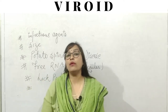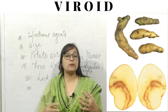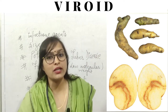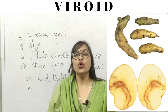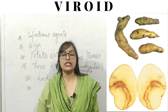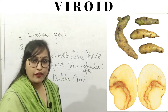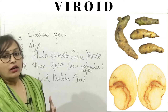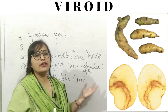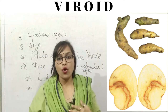The first viroid discovered was found to cause potato spindle tuber disease, which causes slower sprouting and various deformities in the potato plant. The potato plants do not look fresh, showing slower sprouting and various deformities in their potato tuber.